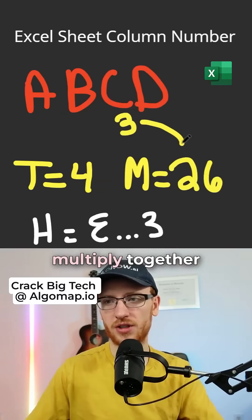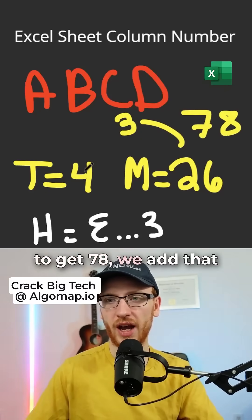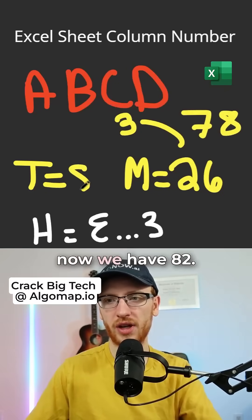From C, we get 3, we multiply together to get 78, we add that to our total, and so now we have 82.